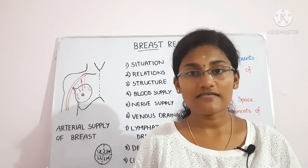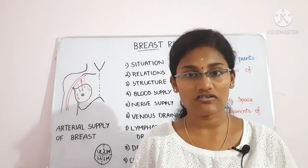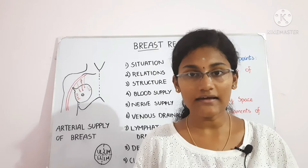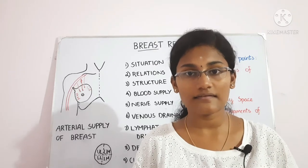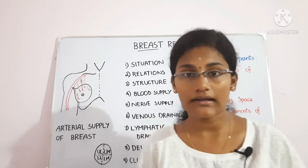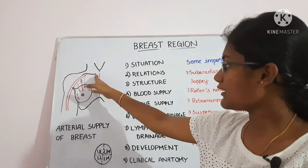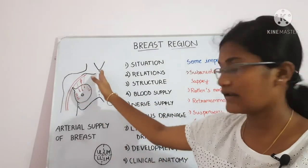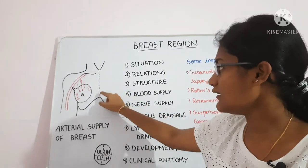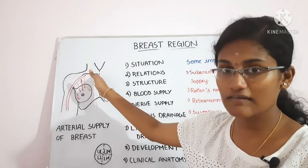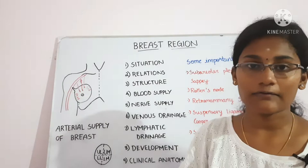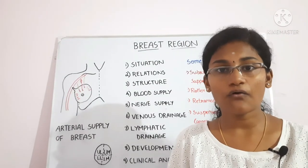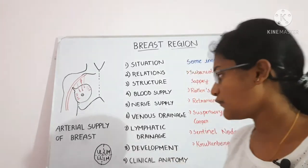The breast is located in the superficial fascia of the pectoral region. It extends vertically from the second rib to the sixth rib, and horizontally from the lateral border of the sternum to the mid-axillary line. The breast is divided into four quadrants.